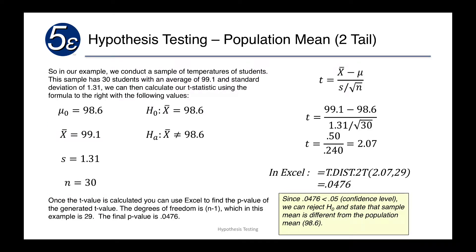We're going to create our hypothesis test, which will always have two parts. We have H0, the null hypothesis — the current belief — which in this case is that x-bar equals 98.6. Then we have the alternative hypothesis HA, which is that x-bar is not equal to 98.6. Statistically speaking, there's going to be some threshold — 98.61 might be the same as 98.6 — and that has to do with our confidence level and ultimately the standard deviation. The t-statistic will handle that for us.